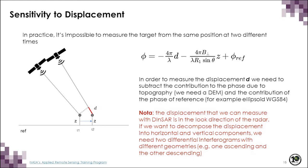In practice, it's generally impossible to measure the same target from exactly the same position at two different times. When making deformation maps, there will be a term corresponding to topography. To measure displacement in such cases, we need to counteract the topographic phase using an external digital elevation model to remove that component. The displacement measured by InSAR is in the look direction of the radar. To decompose this into horizontal and vertical movement, we need to observe the displacement from a different geometry — using ascending and descending pass images.